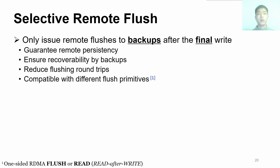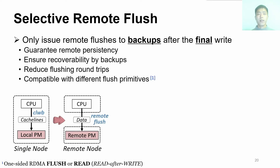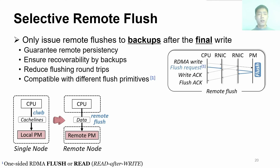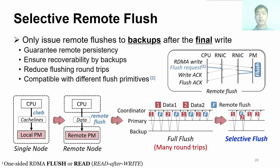To ensure remote persistency, written data are required to be flushed from the RNIC to PM. Like the CLWB instruction in a single node, an RDMA-based remote flush scheme is needed at the remote node. Recently, one-sided remote flush primitives have been proposed to meet this requirement. A flush request is issued after an RDMA write to persist data from the RNIC to PM. However, if we issue a flush operation after each write to each replica, such a full-flush scheme incurs many round trips and increases latency. To address this, FORD proposes a selective flush scheme that only issues flushes to the backups after the final write, because one flush operation covers the previously buffered data. Moreover, after the updated data are persisted in all backups, even if the primary fails, we can recover the new data from backups. By selectively issuing remote flushes, FORD reduces round trips.